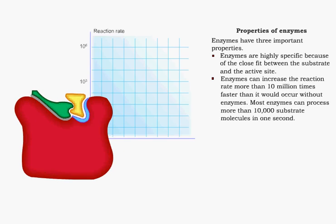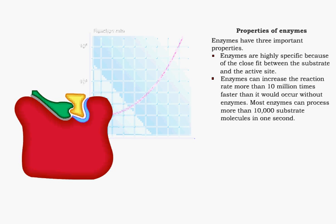Second, enzymes are also very efficient. They can catalyze reactions at a rate more than 10 million times faster than would occur without enzymes. A single enzyme molecule can process more than 10,000 substrate molecules in one second.